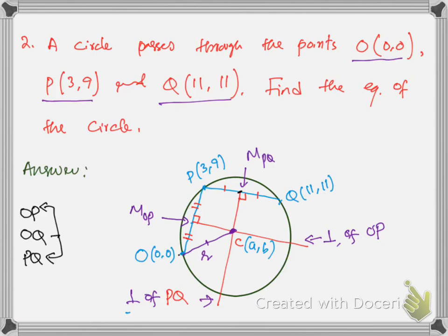After making these 2 chords, you need to draw their perpendicular bisectors. Draw the bisector of chord OP and then chord PQ. This is the perpendicular bisector of chord OP, and then draw the perpendicular bisector of chord PQ. The center is the point of intersection of these 2 bisectors, because the center always lies on the perpendicular bisector of the chord.